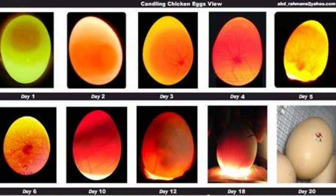On day 19, the chick absorbs the yolk sac into its body, retaining all nutrients to give it strength for the huge task of hatching and resting for one or two days after. Bear in mind that bantams often won't follow this timeline as they're smaller — my Belgian Jean-Luc hatched on day 19.